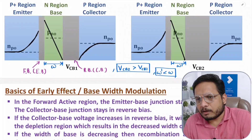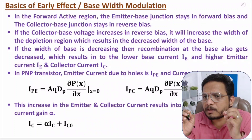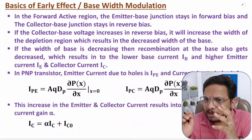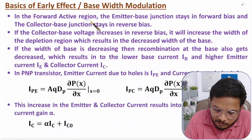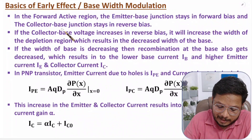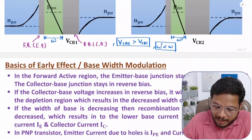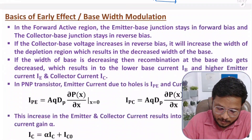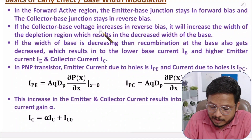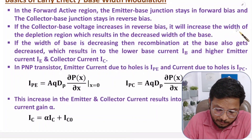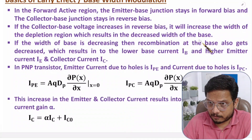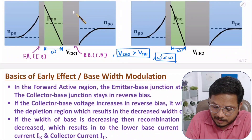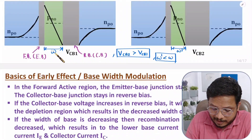Almost 90% of transistor applications use the forward active region. In this mode, the emitter-base junction stays forward biased and the collector-base junction stays reverse biased. As the collector-base voltage increases in reverse bias, the depletion region width increases, which results in a decrease in the width of the base.